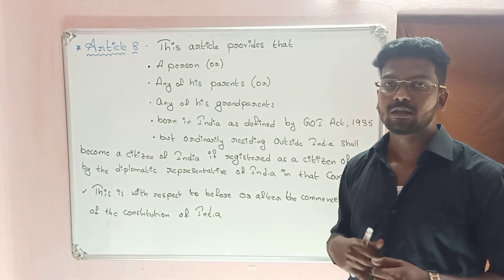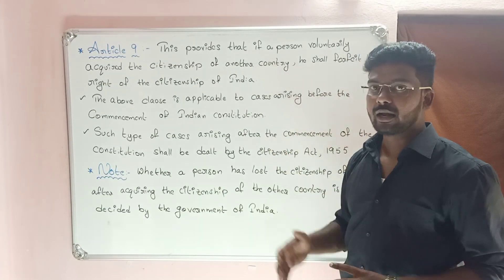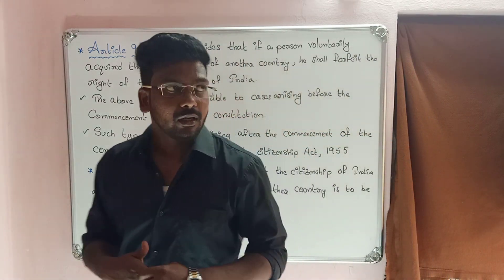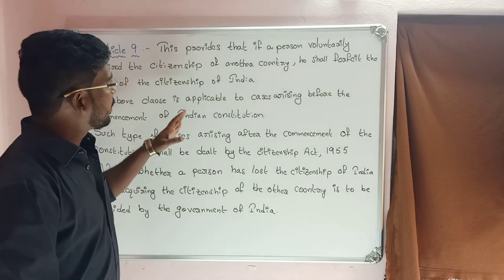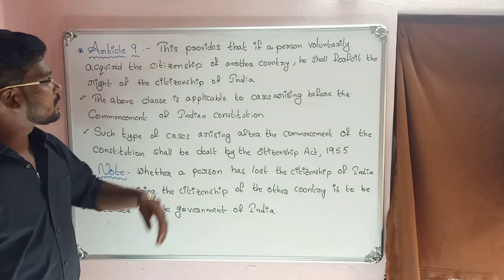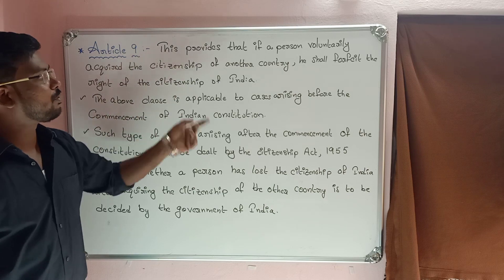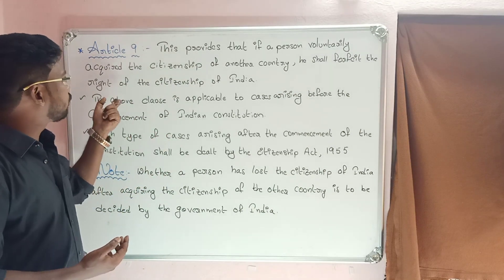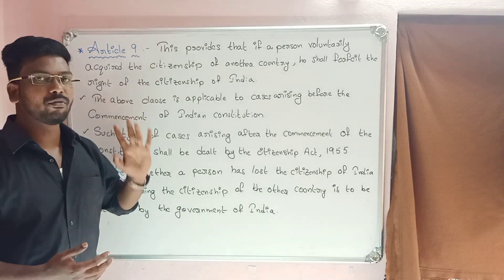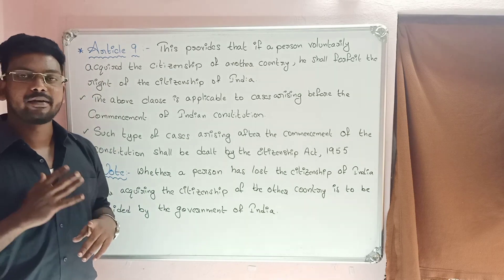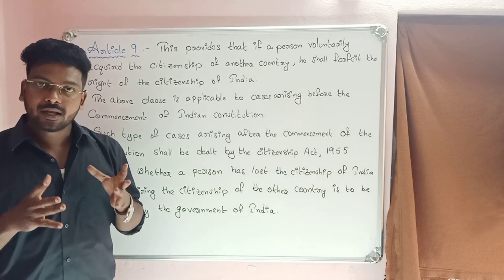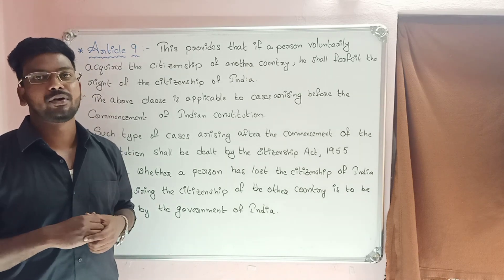Article number 9: This provides that if a person voluntarily acquires the citizenship of another country, he shall forfeit the right of citizenship of India. This applies even if he has acquired citizenship of India under Articles 5, 6, 7, or 8.